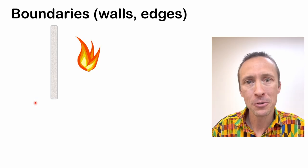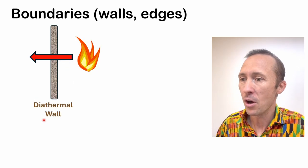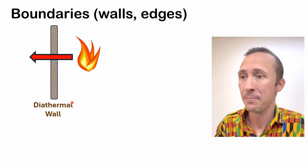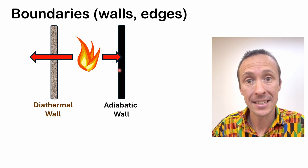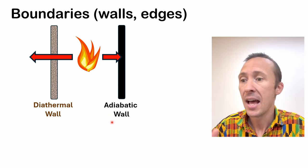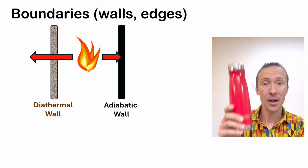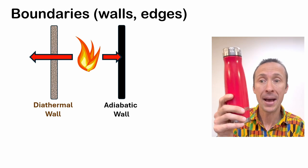If our boundary allows heat transfer to go through, we call that a diathermal wall or a diathermal boundary. If the boundary does not allow heat transfer, so it's thermally insulated, then we call that an adiabatic wall, just like in a thermos. So a thermos will stay hot most of the day, pretty much all day. This is adiabatic.